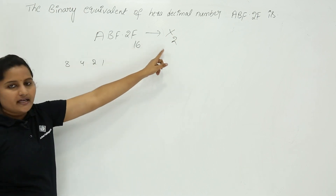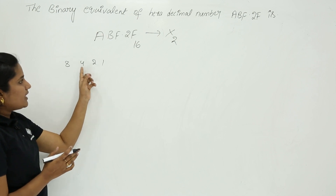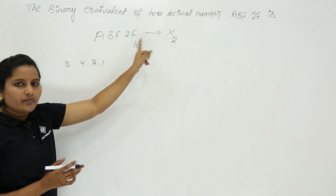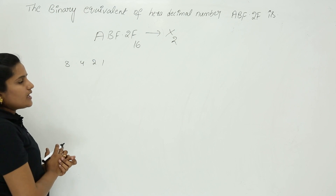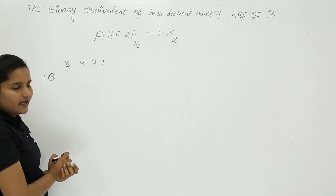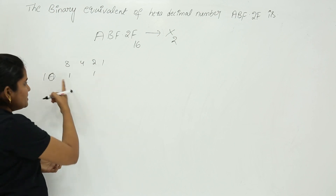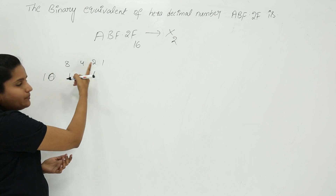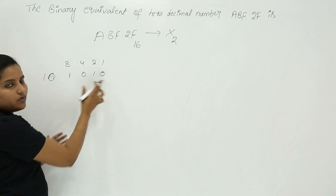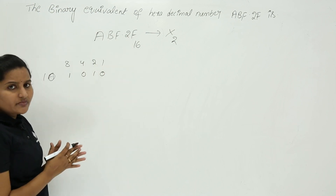From hexadecimal to binary, to get the digits you need to remember the 8421 code. For example, A equals 10. To get 10, the digit positions you need are 8 and 2. So you enable those positions with 1 and put 0 in the remaining digits. The binary for 10 is 1010.